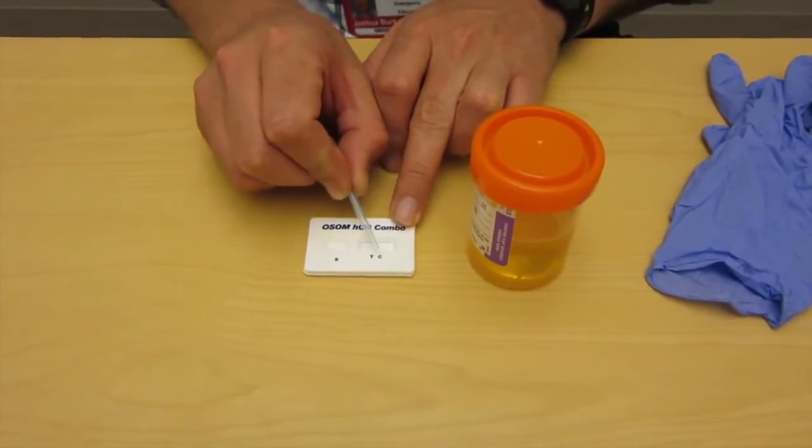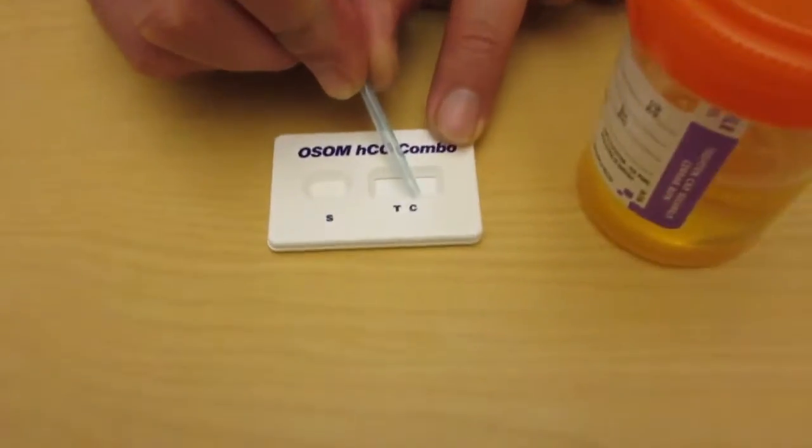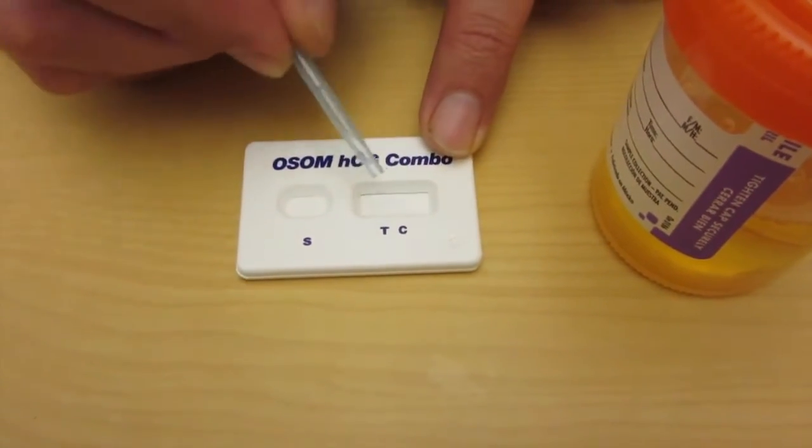We have the actual test cartridge itself. We have a sample well. We have a T and a C that you might notice here. The C stands for control. You have to always have a line there. And a T is the test.